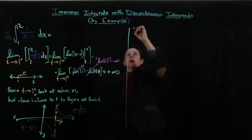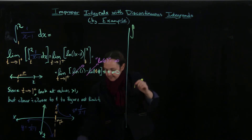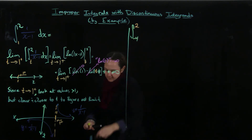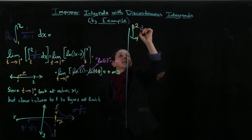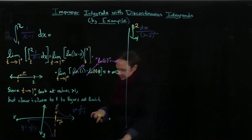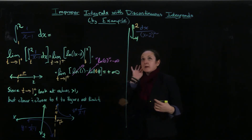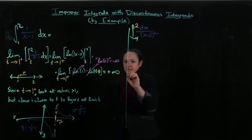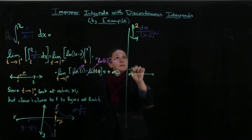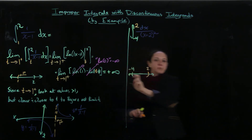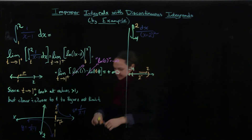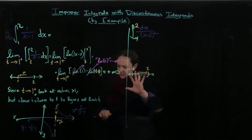Now let's do another example. I want to do the integral from minus 4 up to 2 of dx over (x plus 2) squared. My interval goes from minus 4 on one side to 2 on the other, and I want to stay within the interval, so I need to approach from the left-hand side — this is the 2-minus approach, or a left-hand limit.